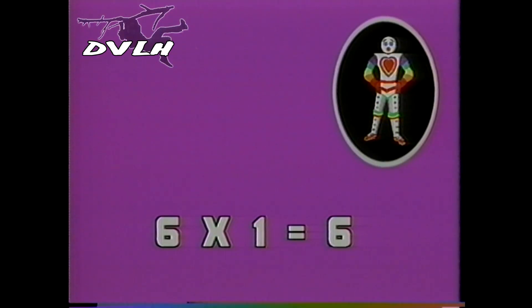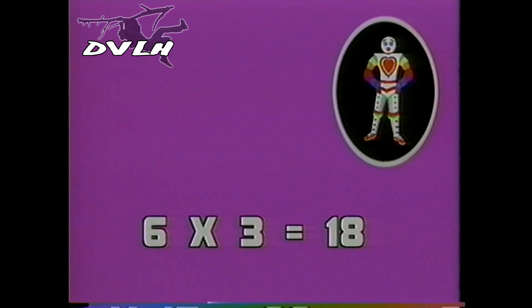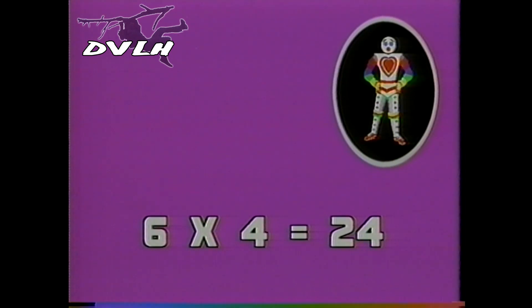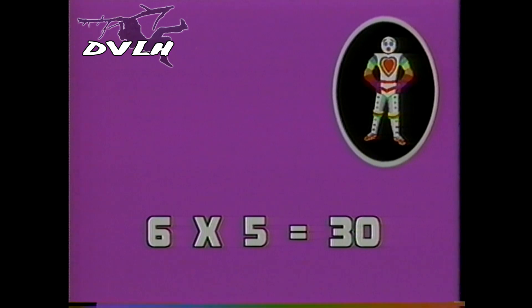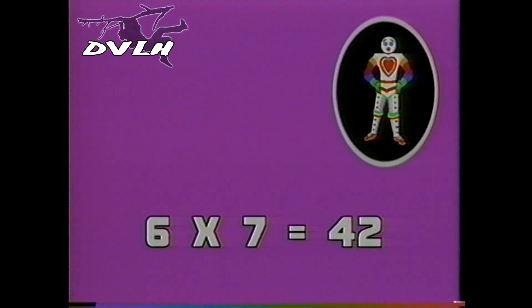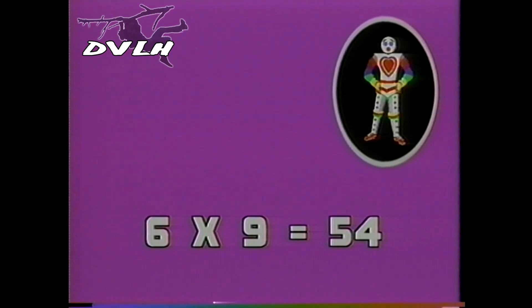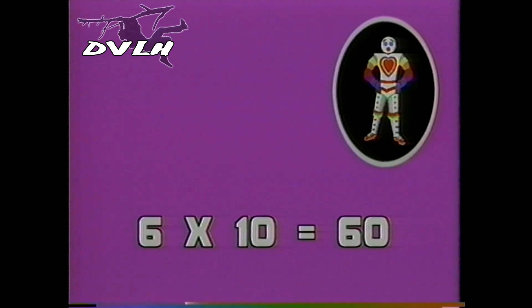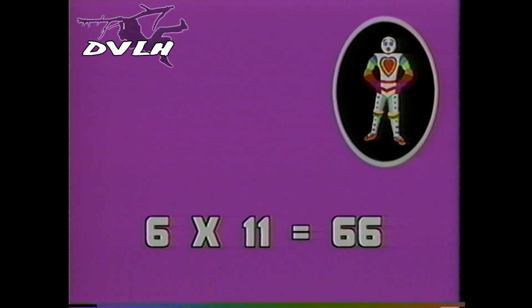Six times one is six. Six times two is twelve. Six times three is eighteen. And six times four is twenty-four. Six times five is thirty. Six times six is thirty-six. Six times seven is forty-two. And six times eight is forty-eight. Six times nine is fifty-four. And six times ten is sixty. Six times eleven is sixty-six. And six times twelve is seventy-two.